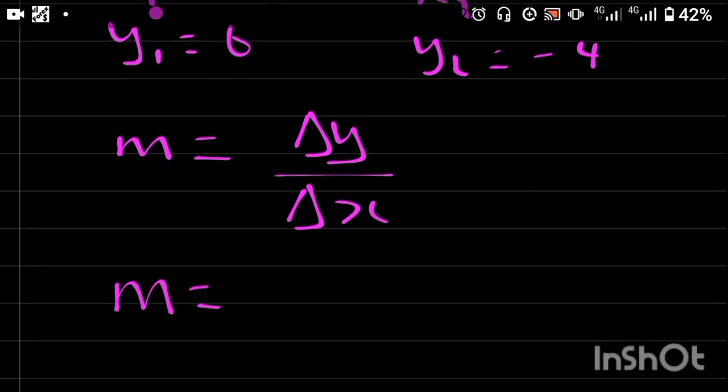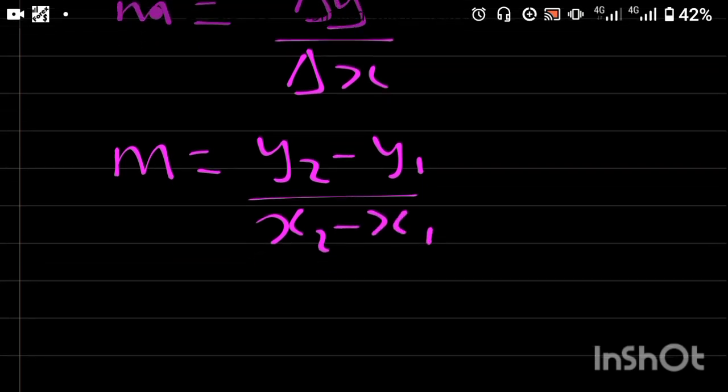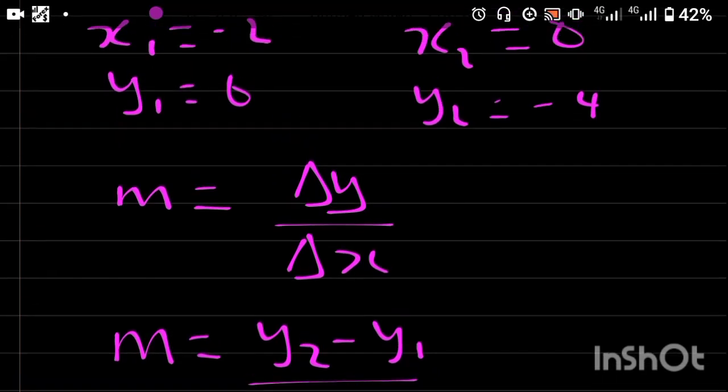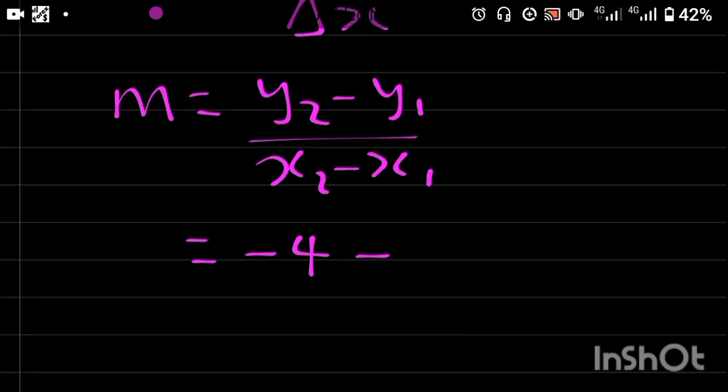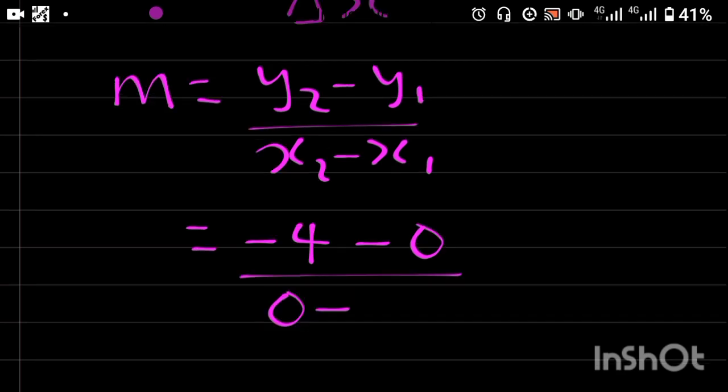Therefore my slope is going to be equal to (y2 - y1) over (x2 - x1). My y2 is -4 minus y1, which is 0, all over x2 which is 0 minus x1 which is -2.